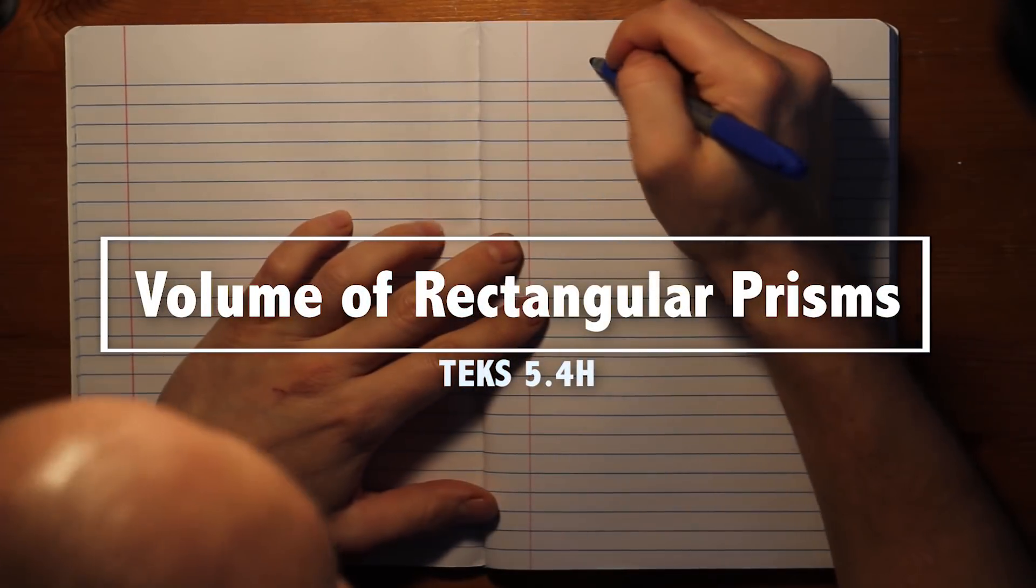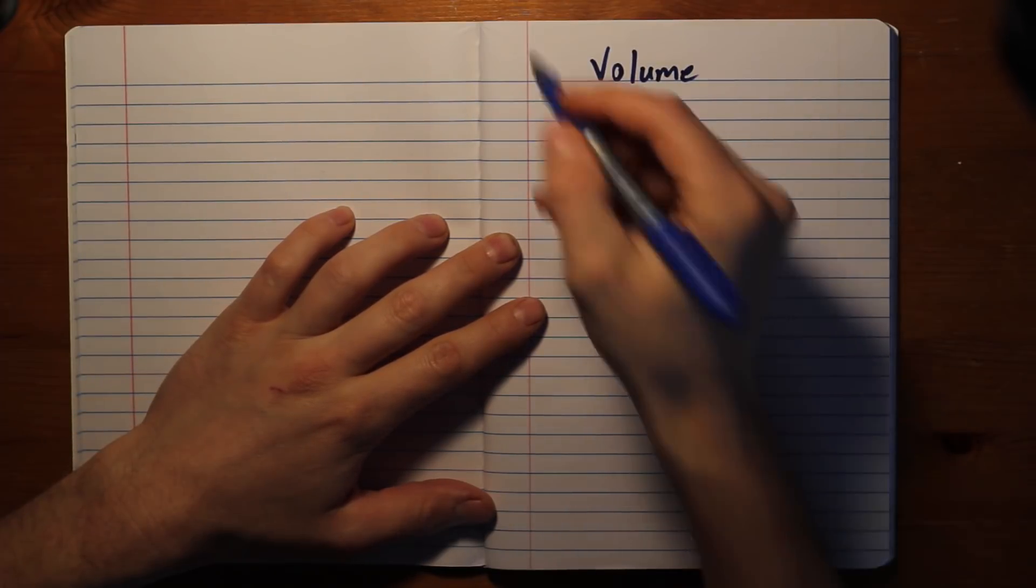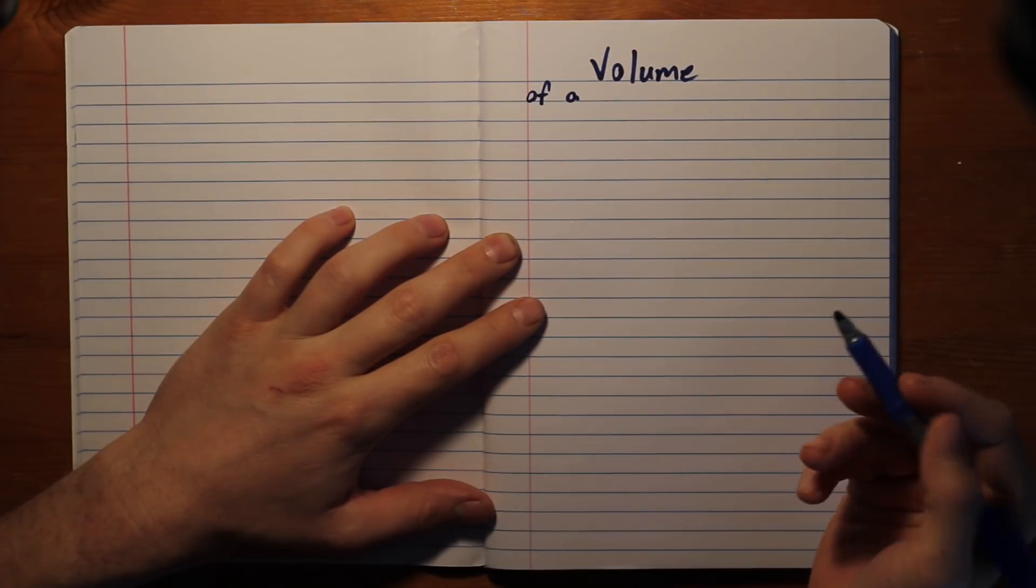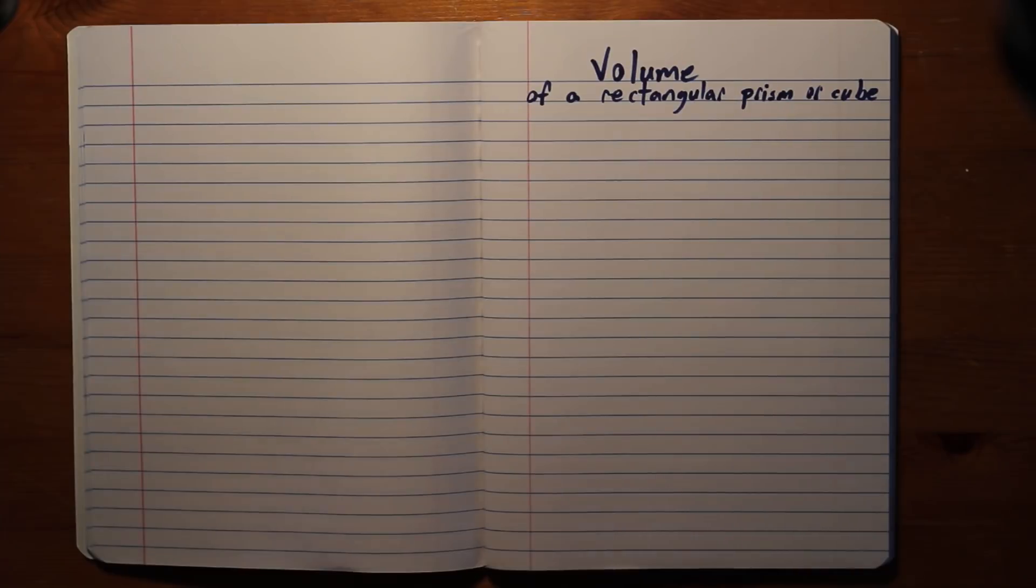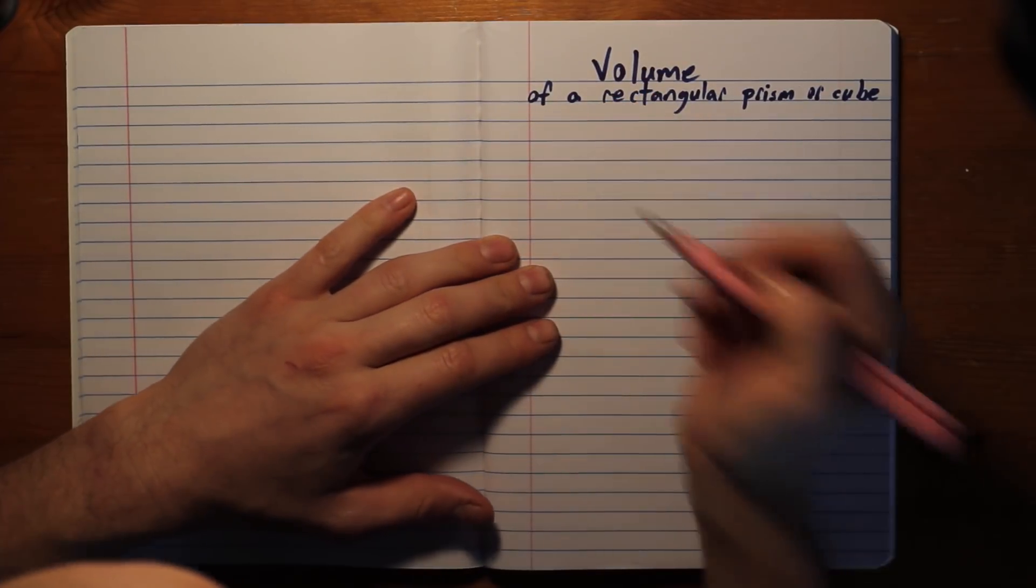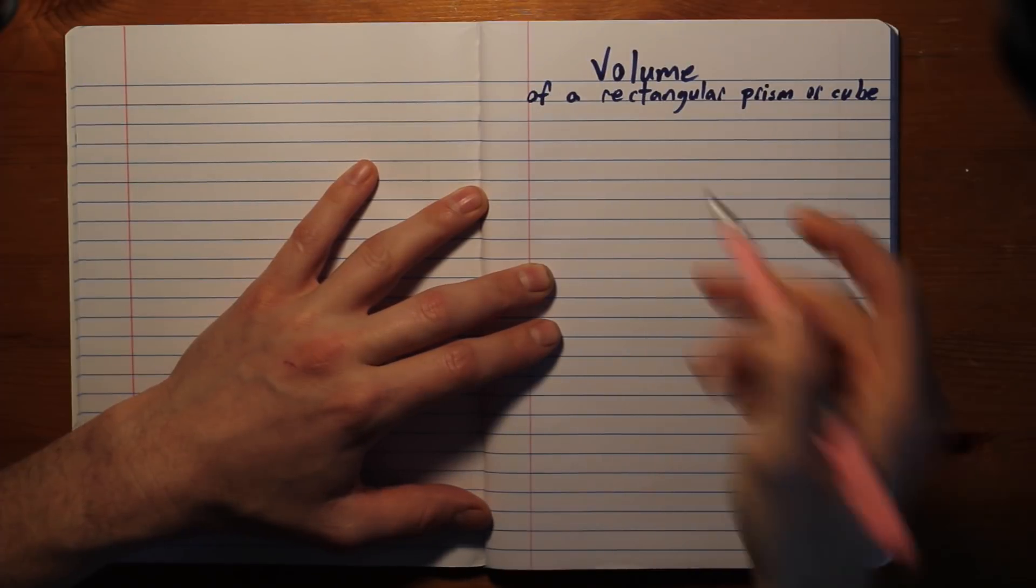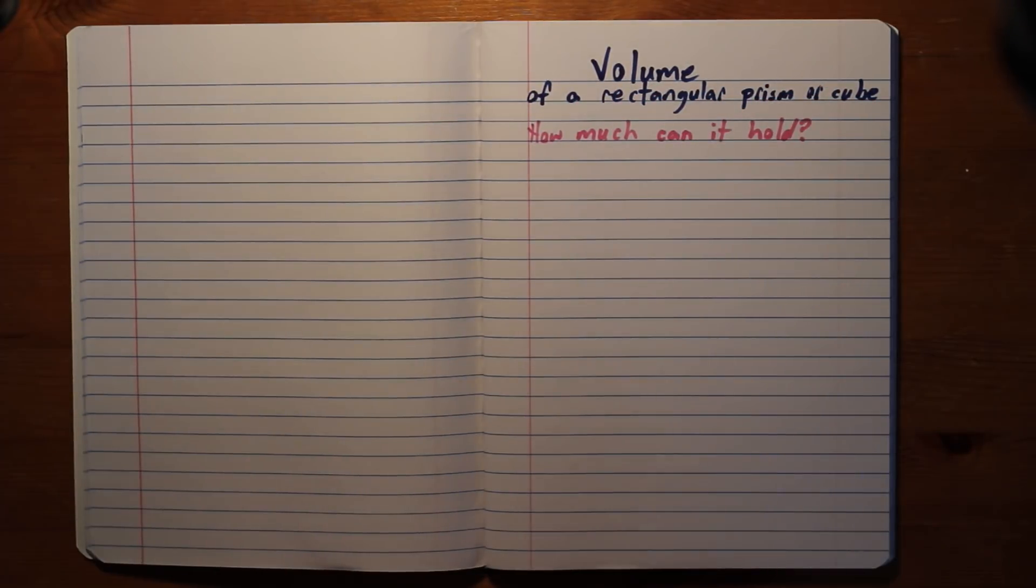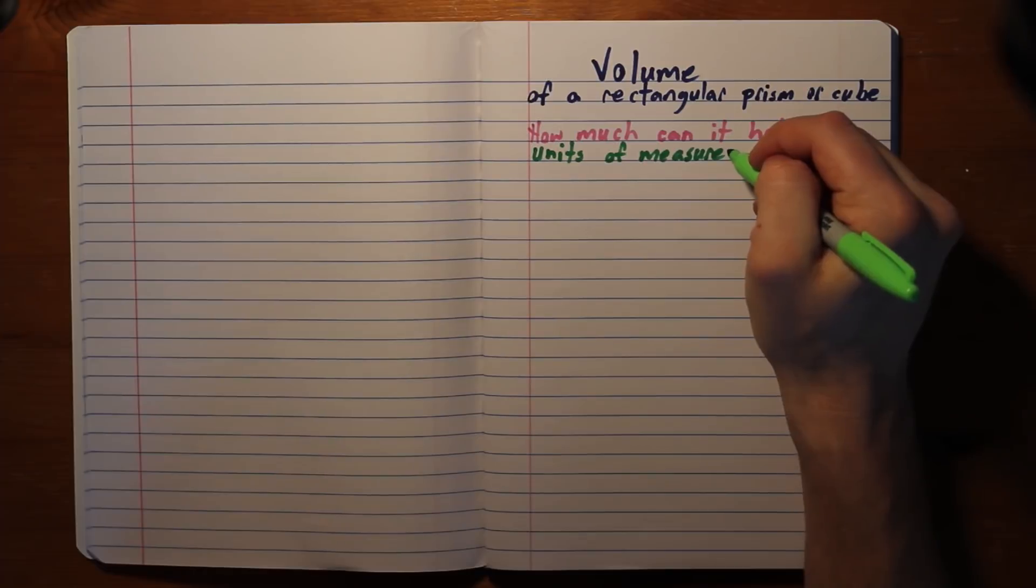So let's talk about volume. Volume, and more specifically, volume of a rectangular prism or a cube. So what is volume? Volume is how much it can hold. How much is it capable of holding? So the first thing we're going to start with is the units of measure. Units of measurement.